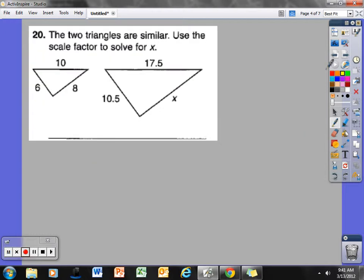Next problem. The 2 triangles are similar. Use the scale factor to solve for X. If I'm looking at these 2 triangles, from here to here, we'll call this triangle A, B, and C. And then I have triangle D, E, and F.